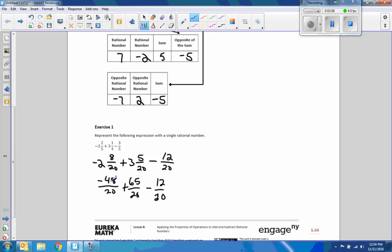Negative 48 plus 65 is positive 17 over 20 minus 12 over 20, and that equals 5 over 20, which reduces to one fourth.